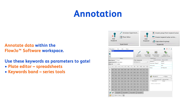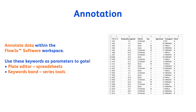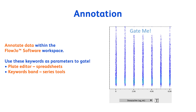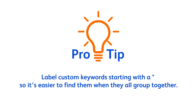Now that our samples are QC'd and compensated, we want to annotate them using keywords. Keywords are metadata within your FCS file that allow the description of each sample — for example, stimulation, tissue, time point, etc. This step is optional, but it results in great efficiency downstream, allowing you to cross-compare different experimental variables rapidly. Pro tip: I like to label my custom keywords starting with a star, so they are easier to find in the keyword list as they all group together.